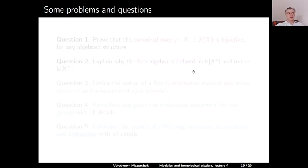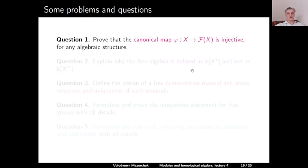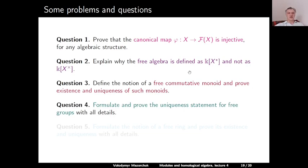Some problems and questions. Question 1: prove that the canonical map φ from X to F(X) is injective for any algebraic structure. Question 2: explain why the free algebra is defined as the monoid algebra of X* and not of X⁺. Question 3: define the notion of a free commutative monoid and prove existence and uniqueness. Question 4: formulate and prove the uniqueness statement for free groups with all details. Question 5: formulate the notion of a free ring and prove its existence and uniqueness with all details. Thank you very much and see you next time.